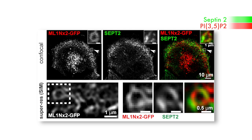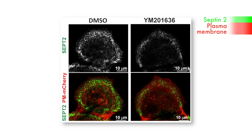Following that, we observed a high degree of co-localization between septins and the phosphoinositide PI(3,5)P2, which marks mature macropinosomes. In fact, inhibiting the synthesis of PI(3,5)P2 reduced the localization of septins to macropinosomes, indicating that this phosphoinositide helps recruit septin filaments to endocytic vesicles as they mature.